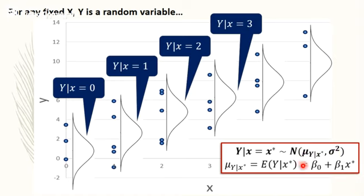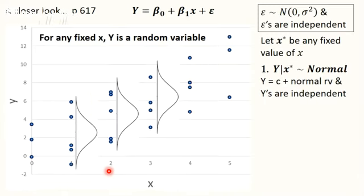The result is: Y given some specific value X-star follows a normal distribution with mean given by beta 0 plus beta 1 times X-star, and variance sigma squared. X-star is just a specific value we've chosen — for example X-star equals 0 or X-star equals 1. I'll now show you why Y given X-star follows a normal distribution with those parameters.